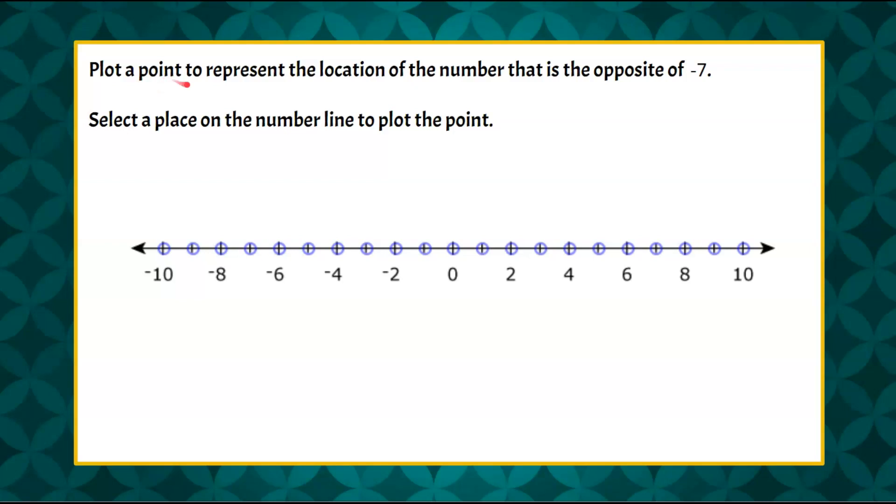We're asked to plot a point to represent the location of a number that is the opposite of negative 7. So you need to select a place on the number line to plot the point. Here is the number line.